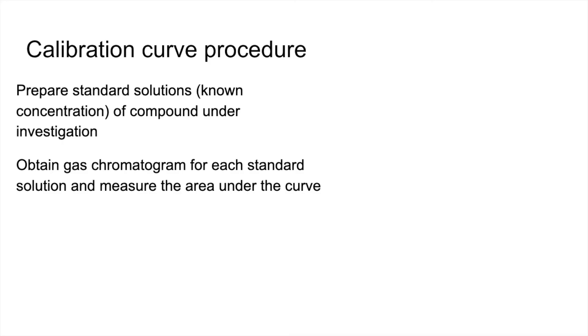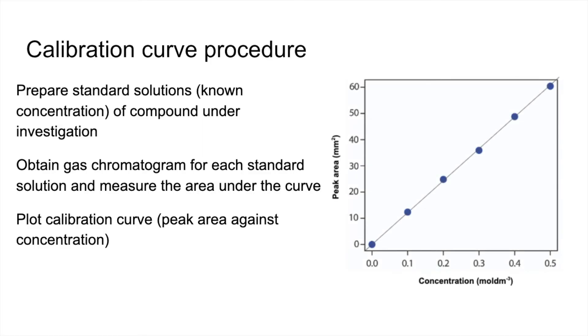We'd obtain a gas chromatogram for each standard solution and measure the area under the curve. We'd plot the calibration curve, so that's peak area against concentration. And that would look something like that.